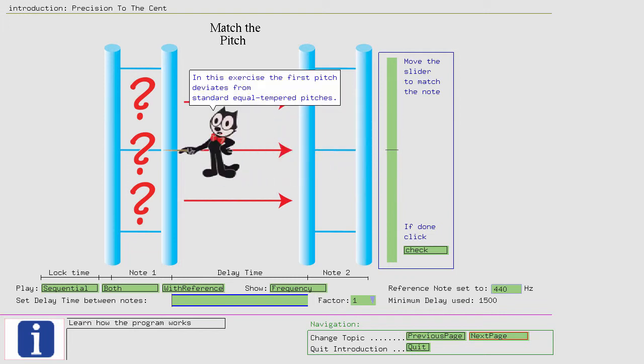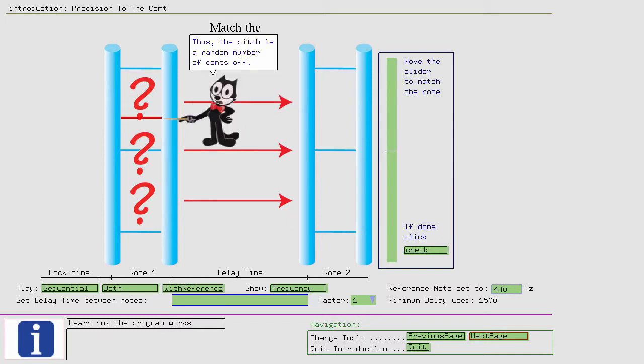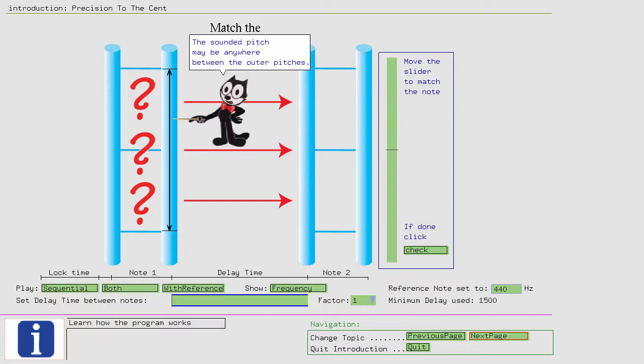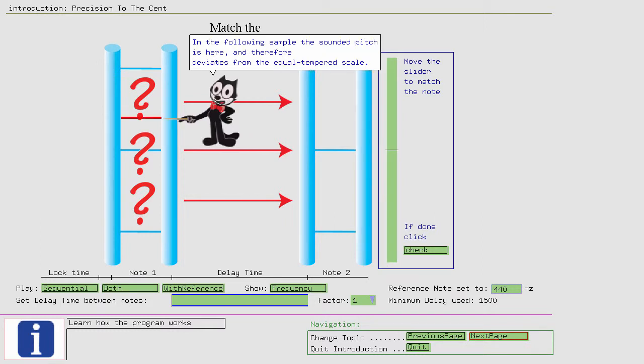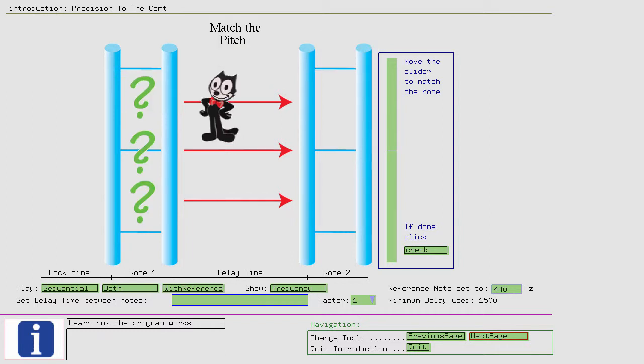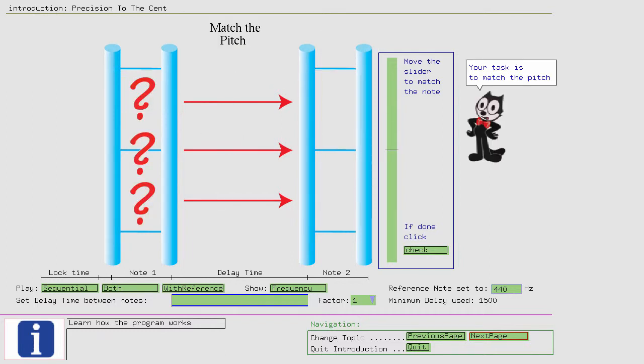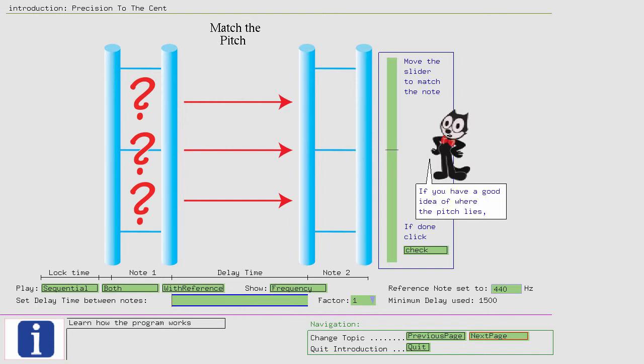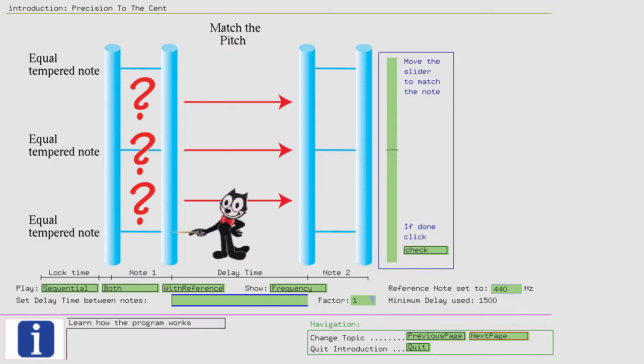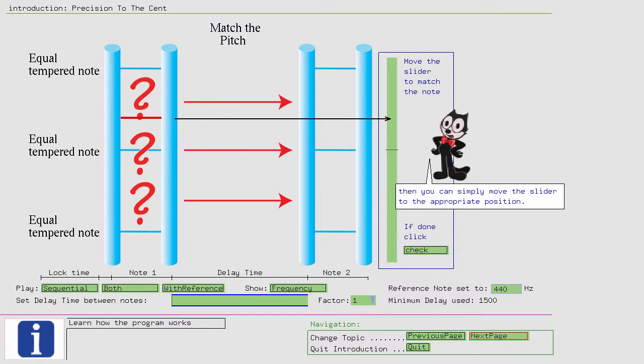In this exercise, the first pitch deviates from standard equal-tempered pitches. Thus, the pitch is a random number of cents off. When the exercise begins, only question marks are shown. The sounded pitch may be anywhere between the outer pitches. In the following sample, the sounded pitch is here and therefore deviates from the equal-tempered scale. Your task is to match the pitch with this slider. If you have a good idea of where the pitch lies between two equal-tempered notes,